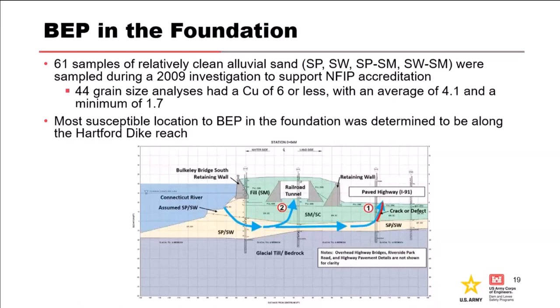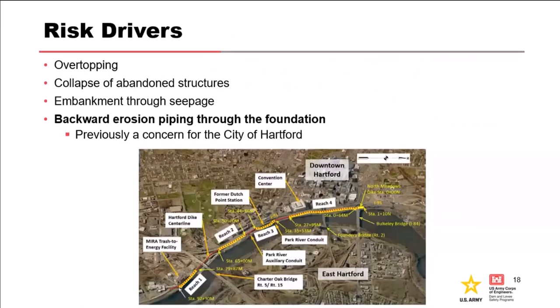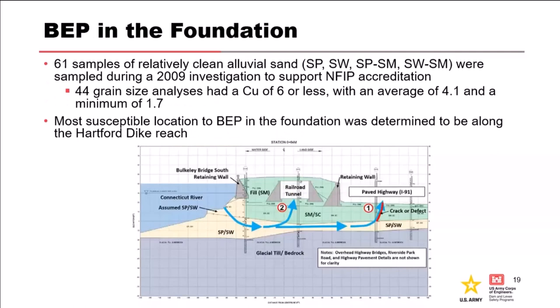This is showing a failure pathway. Out of several sand samples sent in, several had a coefficient of uniformity (CU) of six or less, with an average of 4.1 and a minimum of 1.7, which is pretty low. These are different reaches within one section of the levee used to determine where BEP could occur and where it's most susceptible. You first screen your failure modes, but then you also have to screen locations to figure out where to focus your energy.